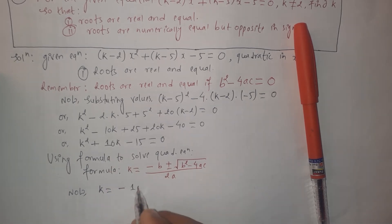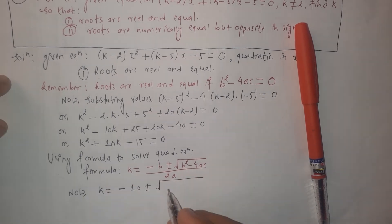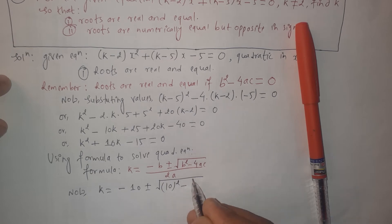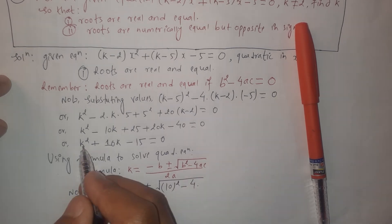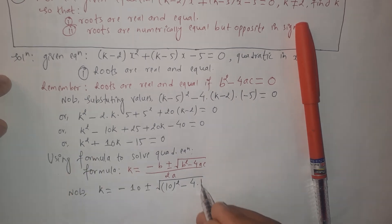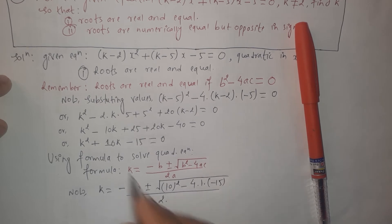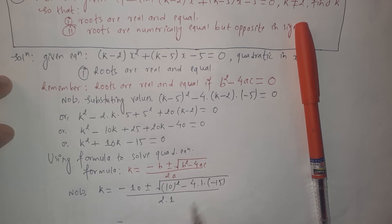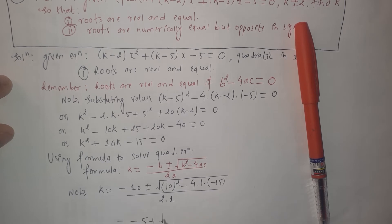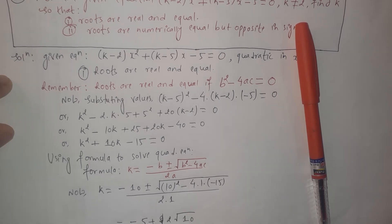Using the quadratic formula: k equals minus b plus or minus square root of (b² minus 4ac), divided by 2a. Here the coefficient of k is 10, so b equals 10. Substituting: k equals minus 10 plus or minus square root of (10² minus 4 times 1 times minus 15), divided by 2 times 1. After simplifying, we get k equals minus 5 plus or minus 2 times square root of 10.